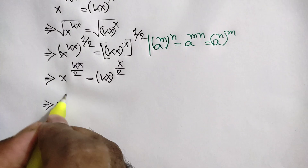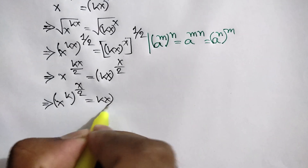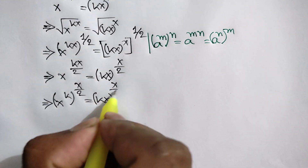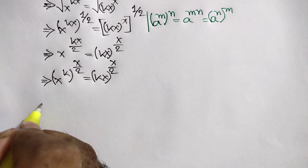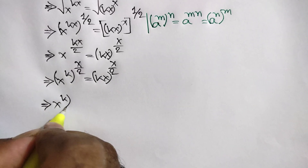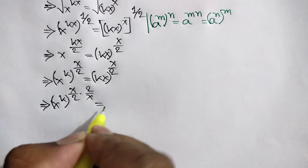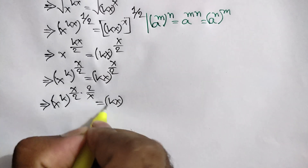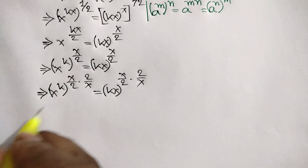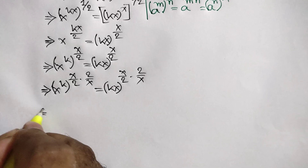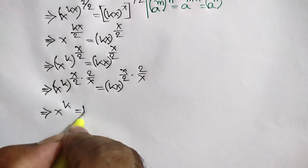Simplifying further, we get x to the power kx over 2 is equal to kx whole to the power x over 2.